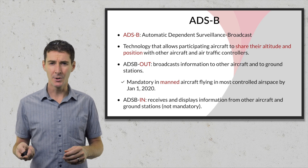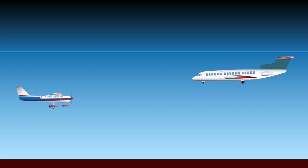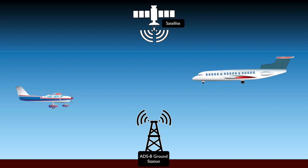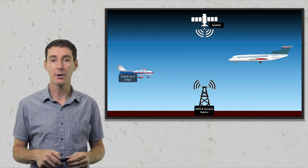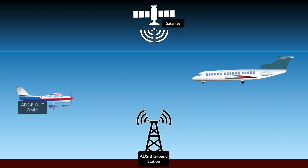Now what does that actually look like in terms of the airspace? Looking at the diagram, we have a small airplane, a large airplane, a satellite, and the ADSB ground station. The small airplane here is ADSB Out only, which is the mandatory equipment for many smaller aircraft. The larger commercial airplane here will be both ADSB In and ADSB Out, meaning it can broadcast its information but also receive information from other places.